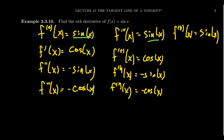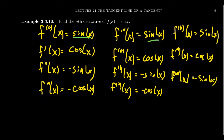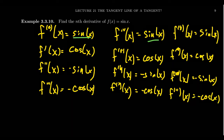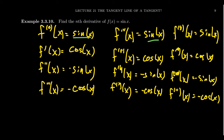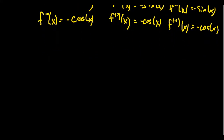You see how this pattern keeps on going. If we take the eighth derivative, you're going to take the derivative of negative cosine, which is again sine of x. The ninth derivative gives cosine of x. The tenth derivative gives negative sine of x. The eleventh derivative of sine gives negative cosine of x. And the twelfth derivative is just sine again — it starts over and over again.